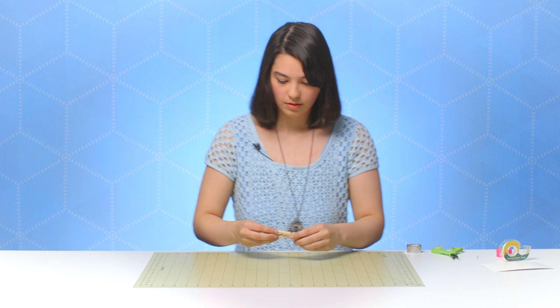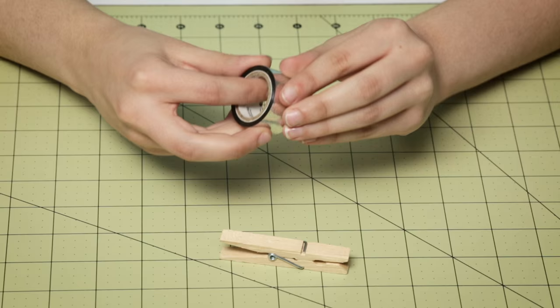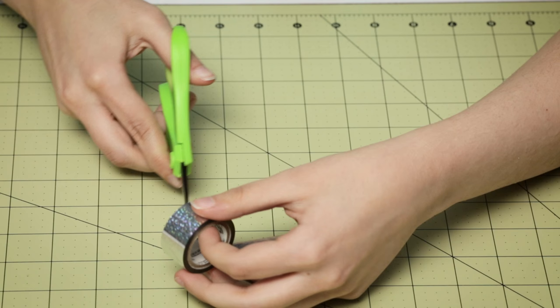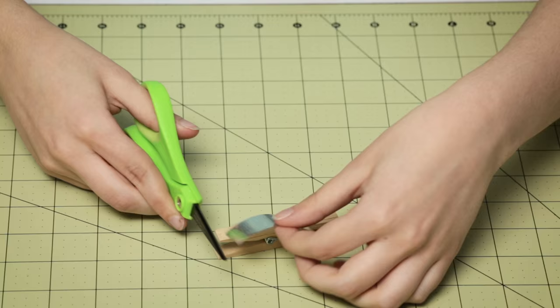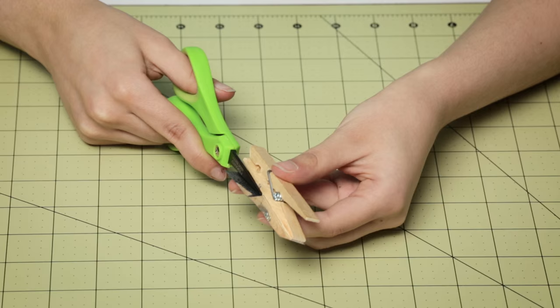The first thing you need to do is take your clothespin and your prism tape. You're just going to take some off and measure how long your clothespin is. Then you want to take your nonstick scissors and cut off the strip like so, and then you can just lay this on top of your clothespin. Flip that over and cut off any excess that you might have. Smooth that out.